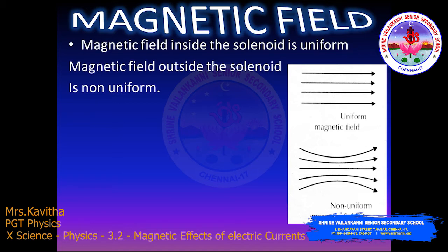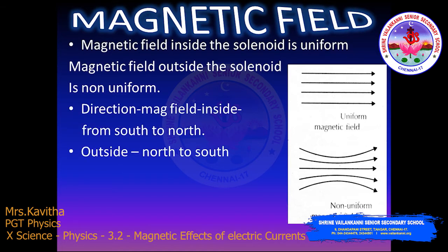The magnetic field inside the solenoid is uniform, but outside the solenoid the magnetic field is non-uniform. The direction of the magnetic field lines inside the solenoid is from south to north, and outside the solenoid it is from north pole to south pole. If the direction of the current flowing through the solenoid is reversed, the north pole and the south pole get automatically interchanged.